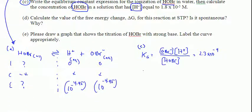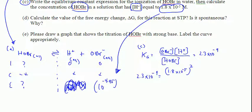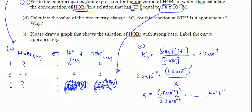So 2.3 times 10 to the minus ninth is equal to 1.8 times 10 to the minus fifth squared, because they're telling us to substitute in the H plus here. We didn't need to do that previous calculation in that case. This is over HOBR, which is going to be X. So we solve for X: X equals 1.8 times 10 to the minus fifth squared divided by 2.3 times 10 to the minus ninth. That gives an answer in units of molarity.